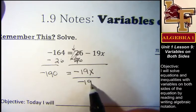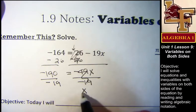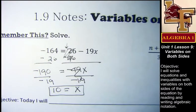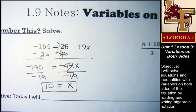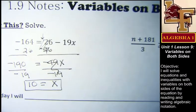I'm going to divide both sides by negative 19. And X equals 10. Yes, positive 10. All right.